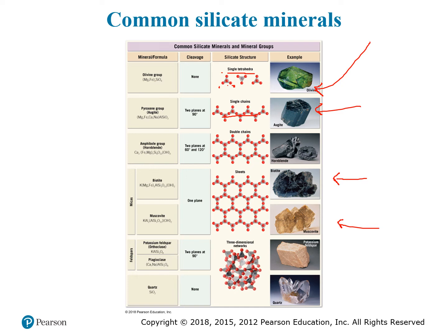The sheet structure of micas creates strong bonds within each sheet but weak bonds between sheets, which is why they cleave so perfectly. Potassium feldspar and quartz both form a three-dimensional network of tetrahedra bonded together — this is what makes them very hard minerals. Quartz has a hardness of 7 and feldspar a hardness of 6.